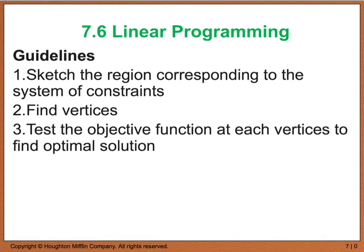A few guidelines before we get started. When we take the approach of linear programming, the first thing we're going to want to do is sketch the region that corresponds to our system of constraints. This gives us that overlapping shaded region where our solutions are going to occur. Then we're going to find the vertex points, or the vertices, of that solution region. Finally, we're going to take each one of those vertices and plug them into our objective function. Please make sure that you test every vertex point so that you're not overlooking where a max or minimum may actually occur.